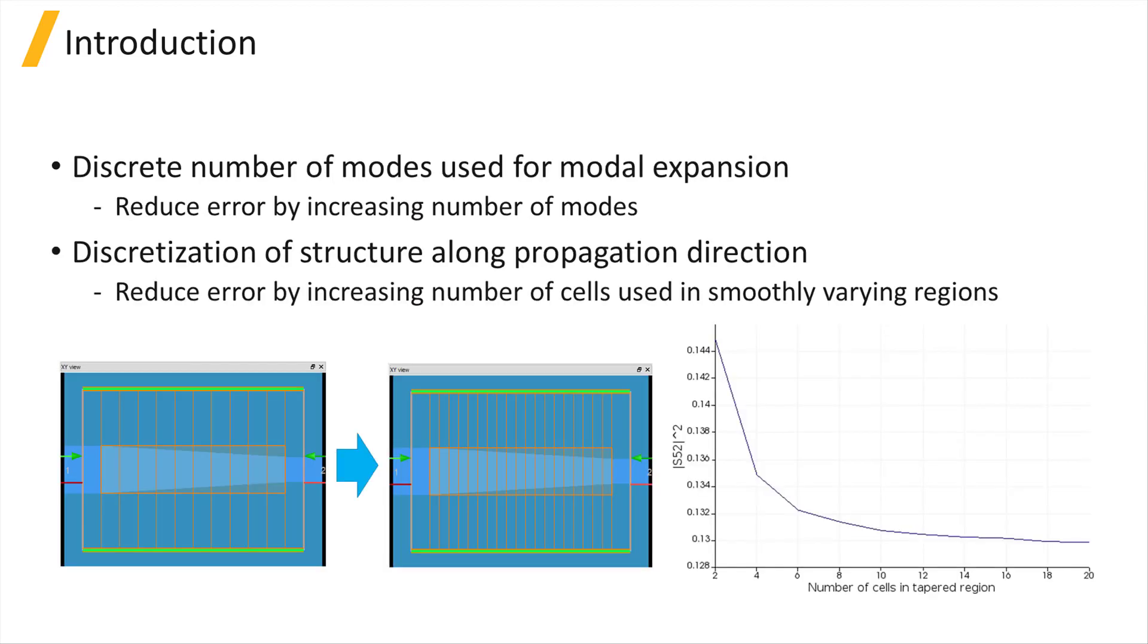The error in the modal expansion can often be reduced by increasing the number of modes found in each cell, and the error due to using a discrete number of cells is reduced as you increase the number of cells used in regions where the structure cross-section is smoothly varying.